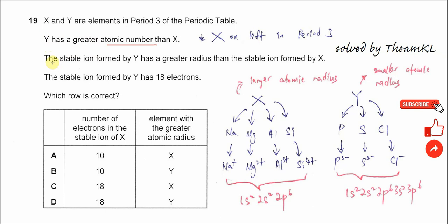The second statement: the stable ion formed by Y has a greater radius than the stable ion formed by X. Before we continue, let's tell you the possible ions that can be formed by these Period 3 elements.